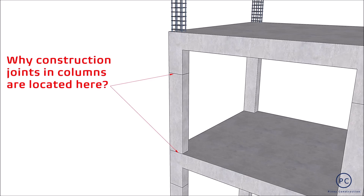Sa palagay po ninyo, bakit kaya dito ang location ng construction joints sa column? Alam natin na ito ay chosen primarily for constructibility reason. Mas madali kasi ang pag-a-assemble ng formworks sa location na ito. Kung pag-uusapan naman ang strength requirements, hindi ba't sinasabi na ang pagkakaroon nito ay nagpapahina sa shear strength ng isang structural member?